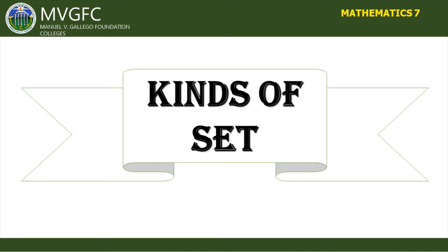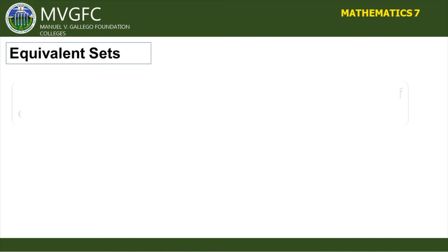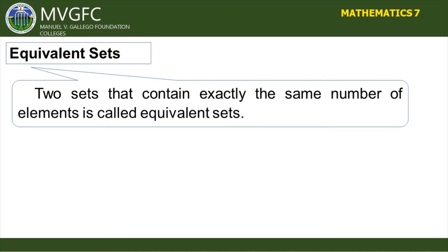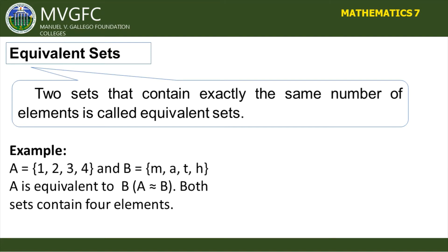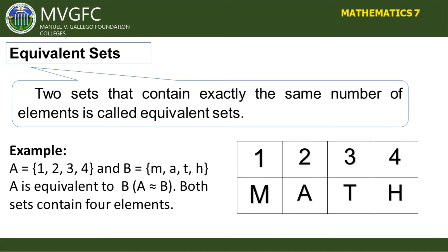The first kind is equivalent sets. Equivalent sets are two sets that contain exactly the same number of elements. For example, Set A = {1, 2, 3, 4} and Set B = {M, A, T, H}. Set A is equivalent to Set B, written as A ≈ B, because both sets contain four elements.